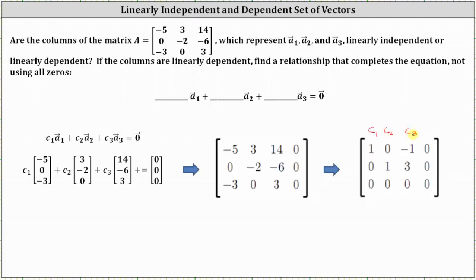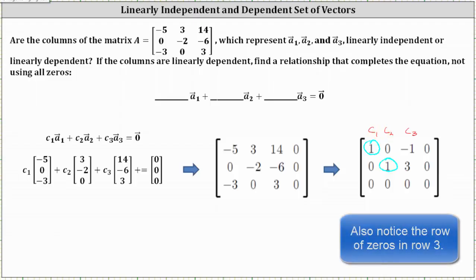And now let's identify the pivots. Notice how we only have two pivots, row one column one, and row two column two, which means C1 and C2 are the basic variables, and C3 is a free variable.